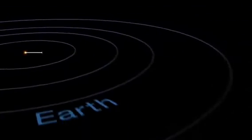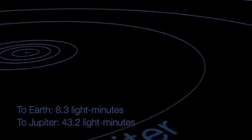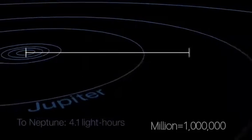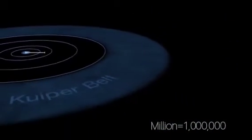Sun to Earth distance is 8.3 light minutes. Jupiter, 53.2 light minutes. One light hour is 671 million miles.